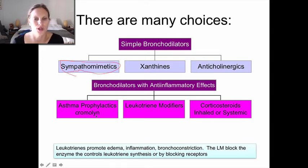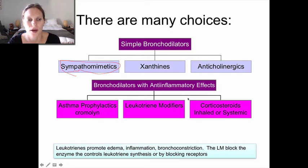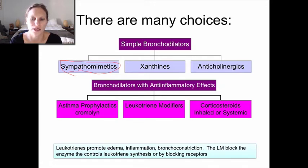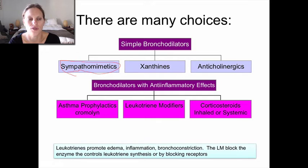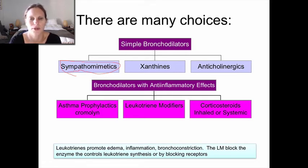There are other bronchodilators with anti-inflammatory effects that decrease the likelihood of airway remodeling. These are used prophylactically — to stave off an attack, not during an acute episode. The oldest is cromolyn, a mast cell stabilizer that keeps mast cells from releasing histamine, which is part of the allergic response. In an acute attack, these anti-inflammatory drugs aren't effective enough to open the airway in an emergency.